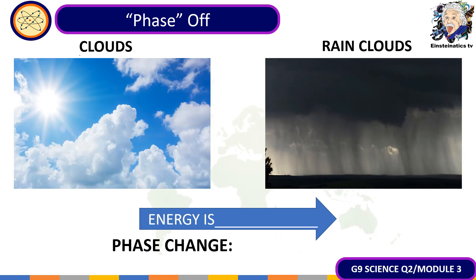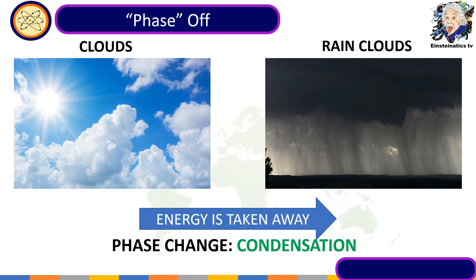Next example: clouds turning into rain clouds. Identify whether energy is absorbed or taken away, and identify what kind of phase change this illustrates. The correct answer is that energy is taken away, and the phase change is known as condensation.